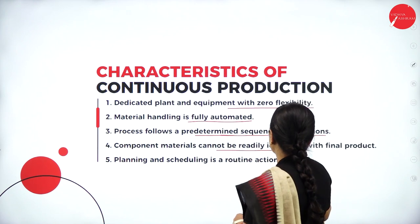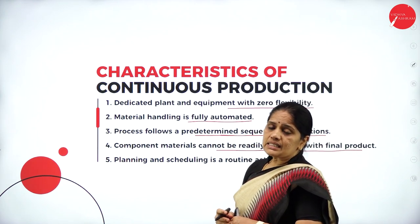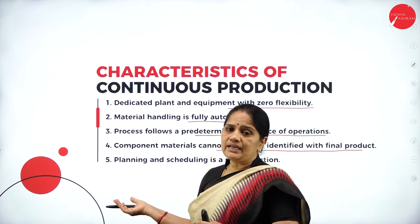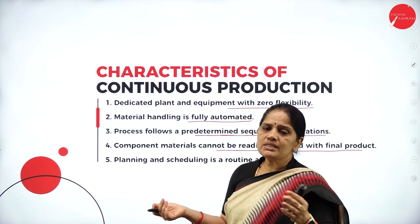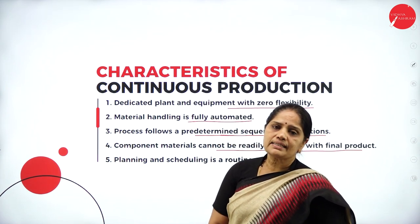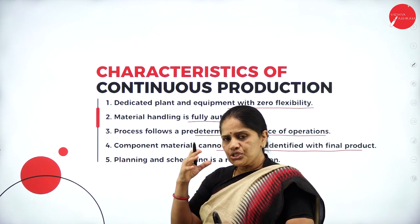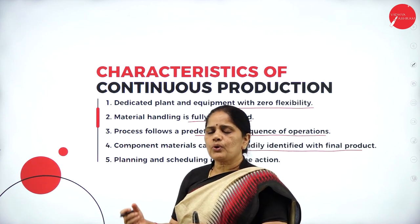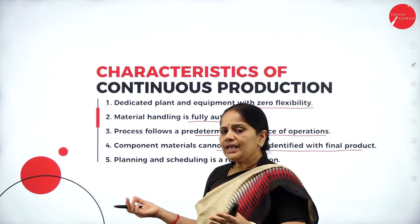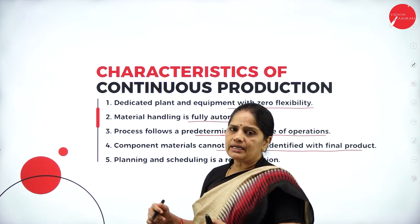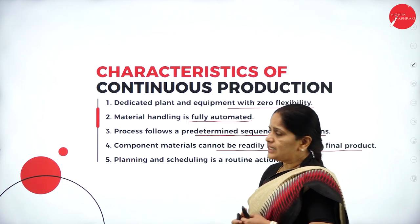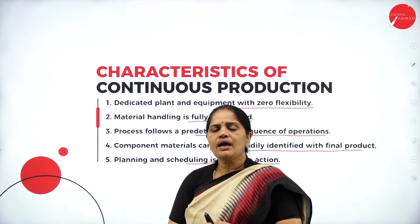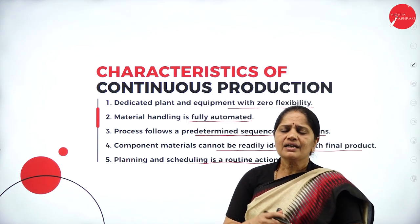Fourth, component materials cannot be readily identified with the final product. In continuous production, the raw materials going into making the product cannot be matched with the final product — for example, in sugar production, sugarcane is introduced into machinery, juice is extracted and processed, and the result is sugar, which is completely different from the raw material. Fifth, planning and scheduling is a routine action — the same thing is repeated over and over with nothing different.